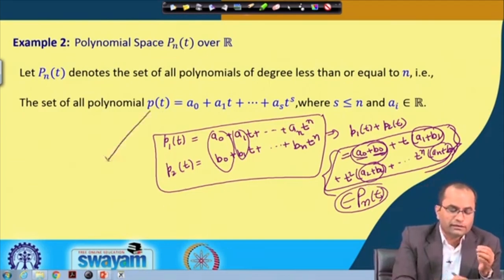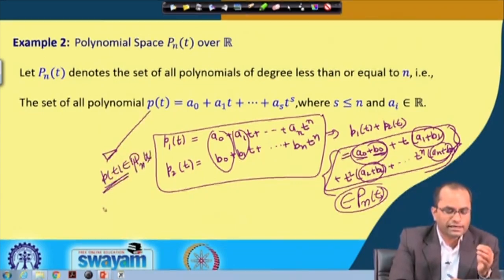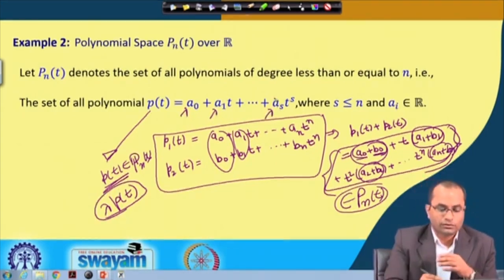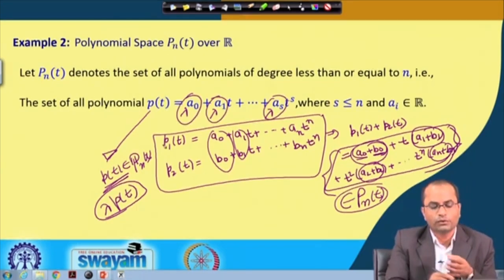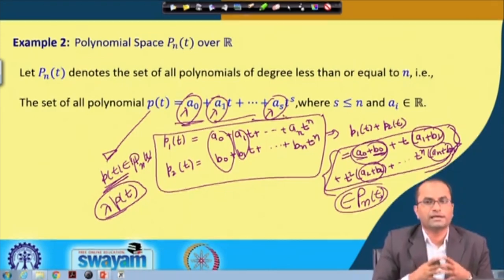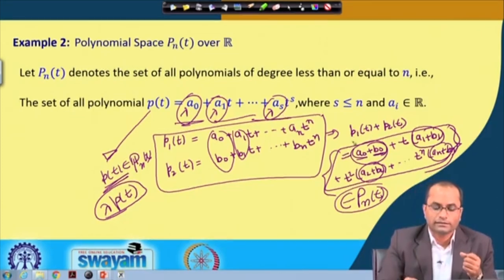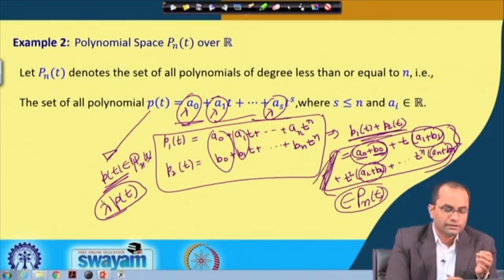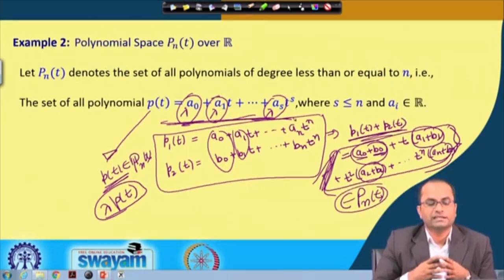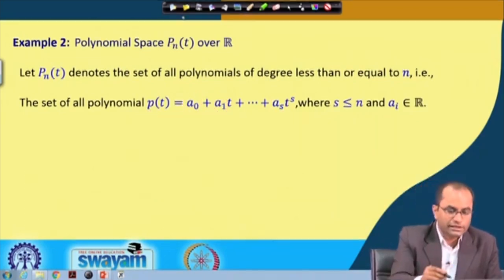Similarly, when we take P(T) from P_n(T) and multiply by any scalar lambda, the result lambda·P(T) has lambda multiplied to a0, a1, ..., and each a_s, and this new polynomial is again an element of P_n(T). So we have closure under scalar multiplication and closure under addition, both defined in this way. Therefore the polynomial space P_n(T) over R is a vector space.